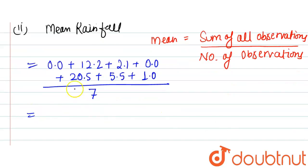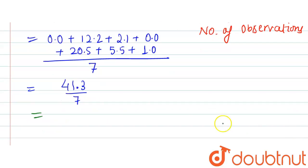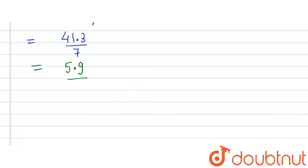Now if we add 0.0, 12.2, 2.1, 0.0, 20.5, 5.5, and 1.0, we will get 41.3 divided by 7. So it will be 5.9. This is our mean rainfall. We can write mean rainfall is 5.9 millimeters.